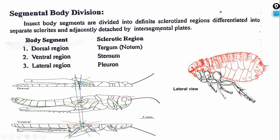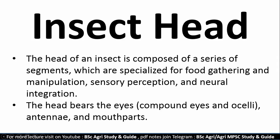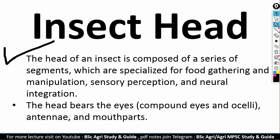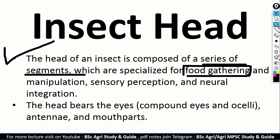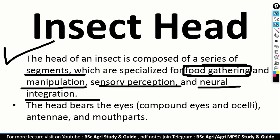Let's see about the insect head. As you know, insect body is made up of head, thorax, and abdomen, and first is the head. The head of the insect is composed of a series of segments which are specialized for food gathering and manipulation, sensory perception, and neural integration.